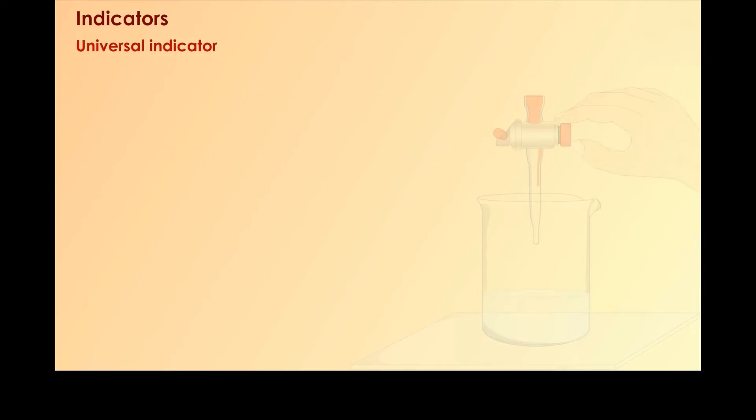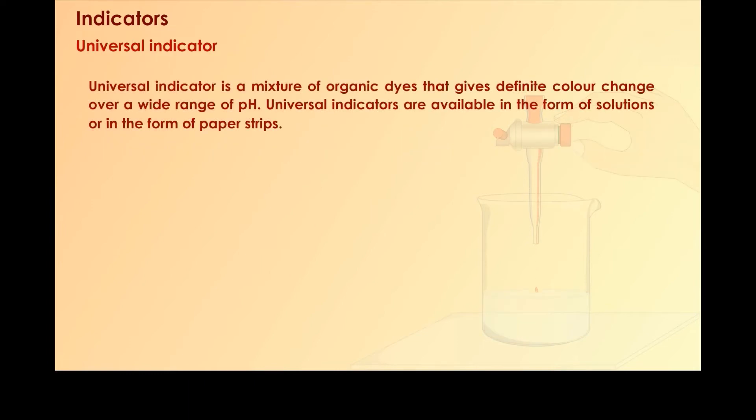Universal indicator. Universal indicator is a mixture of organic dyes that gives definite color change over a wide range of pH. Universal indicators are available in the form of solutions or in the form of paper strips. The universal indicator differentiates acidic and basic nature of solutions and indicates the strength of the solution.